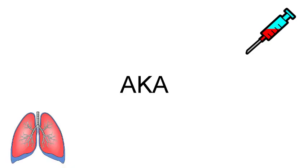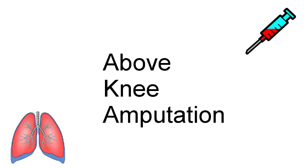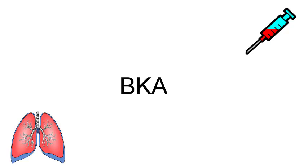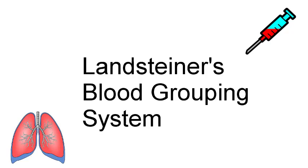AKA is our next one. It's not 'also known as' — it's above the knee amputation. And then BKA is below the knee amputation. ABO refers to blood types. We have type A, type AB, type B, and then O, and positive or negative. So that's why we go ABO.